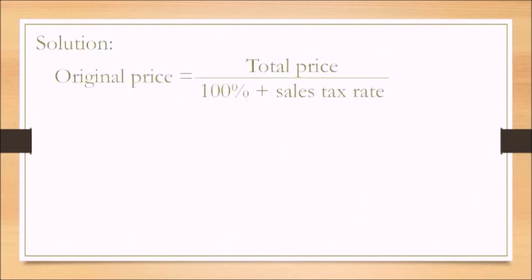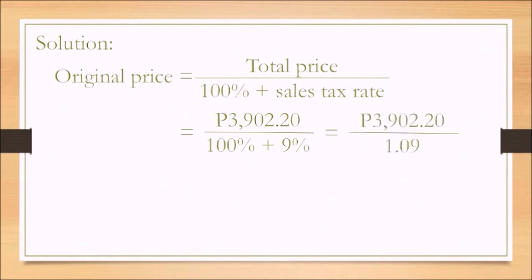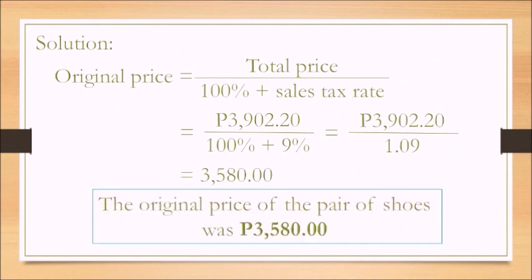So that would be $3,902.20 divided by 1.09. So the original price of the pair of shoes was $3,580.